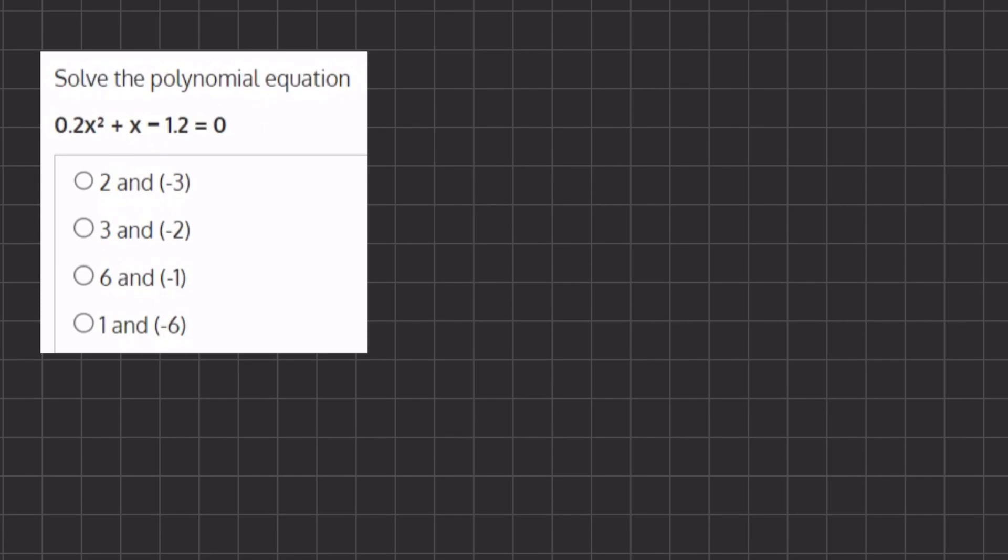In this problem we want to solve the polynomial equation 0.2x² + x - 12 = 0. We are given coefficients with decimals, and in order to get rid of the decimals, we are going to multiply everything by 5.